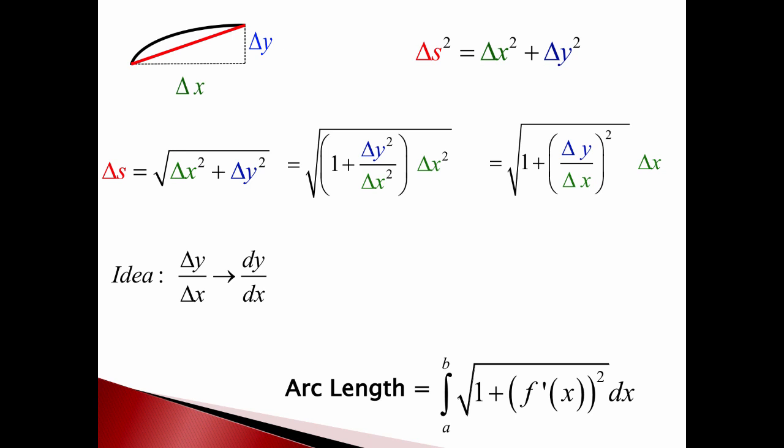We end up with the integral from A to B, two endpoints of the curve, and then the square root of 1 plus the derivative squared dx. So this is really cool.